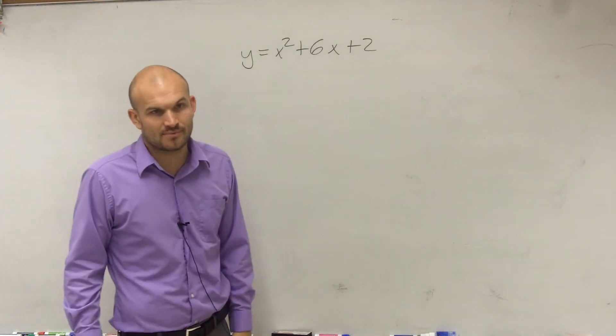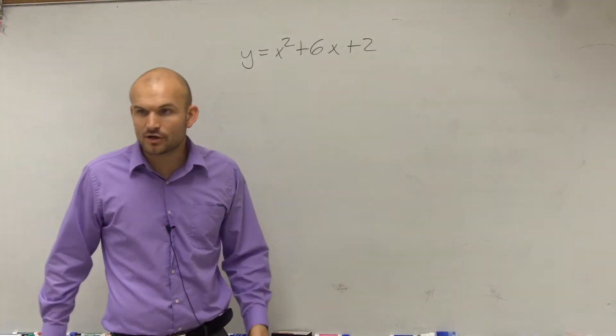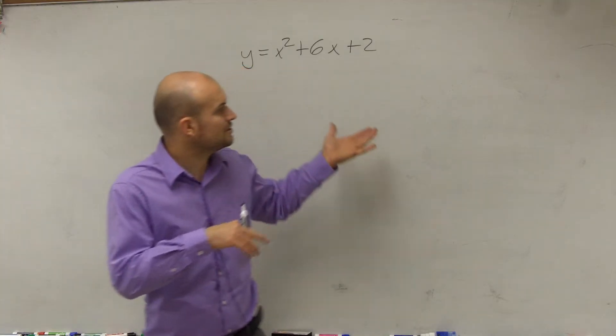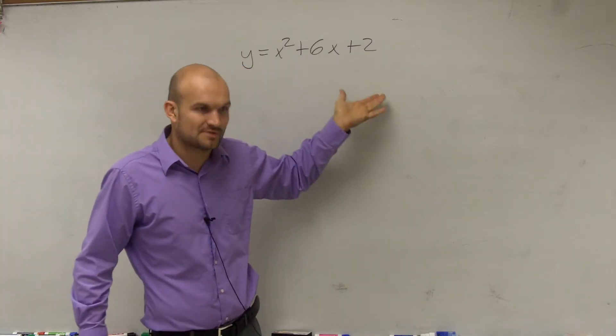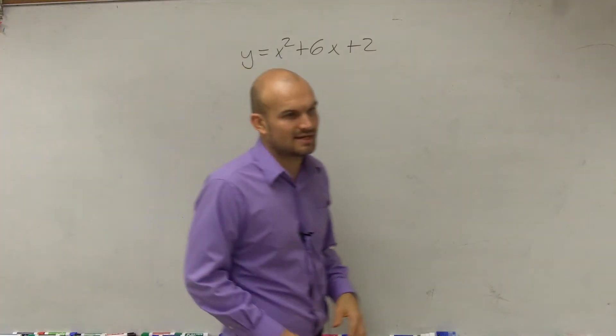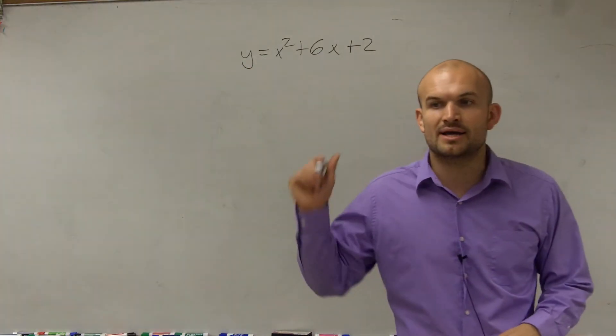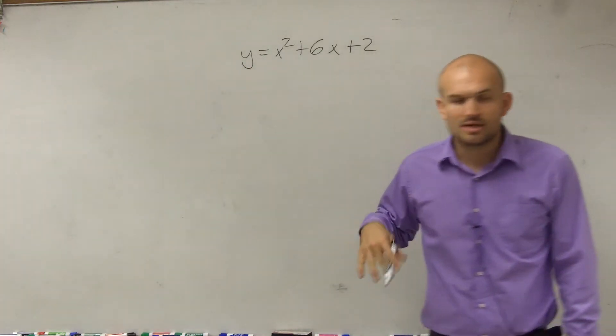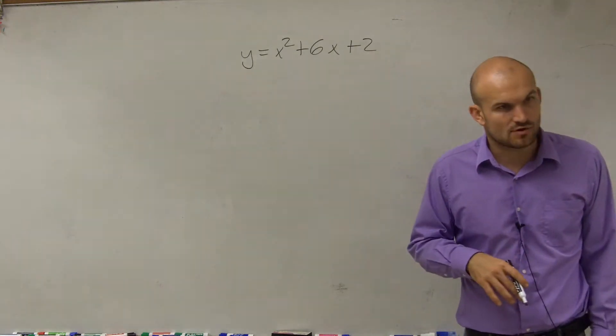But now this isn't in vertex form, and therefore I'm going to have a little bit more difficulty being able to graph. Remember, I have to do the axis of symmetry for this one and then plug it back in. So how can I take a quadratic that's in my quadratic form to be able to put it in vertex form?